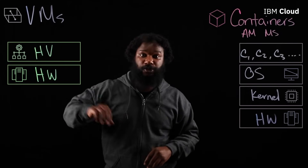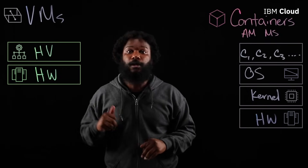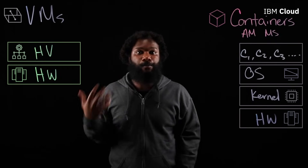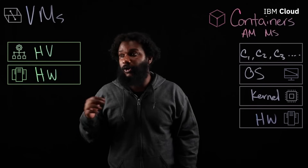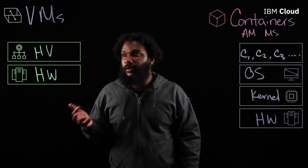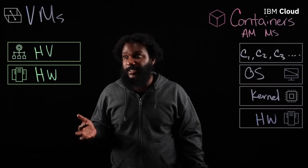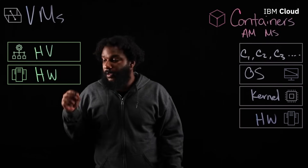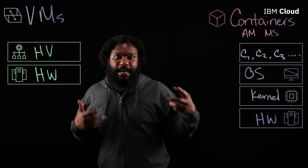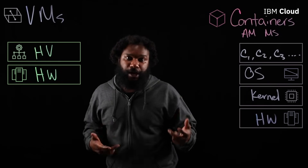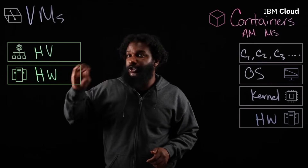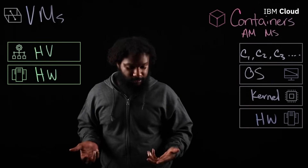Whereas with our virtual machines, we're working at the hardware level. This model I've drawn out is our type one hypervisor, also called full virtualization or full system virtualization. The second thing I want to bring up is about the type of isolation that we're achieving. With our virtual machines, we're achieving isolation of machines.